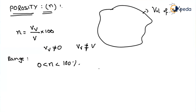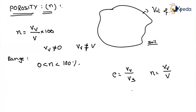Now let us express void ratio and porosity in a single equation. Void ratio is volume of voids divided by volume of solids. Porosity in fraction form is volume of voids divided by total volume. In both equations, if volume of voids is constant for a particular soil, the denominator for porosity — the total volume, which includes volume of solids plus volume of voids — is obviously larger than just the volume of solids. So as the denominator is more, porosity will always be lesser in comparison to void ratio. Remember: porosity represents voids with respect to the entire volume, while void ratio represents voids only with respect to volume of solids. So porosity will always be less than void ratio.